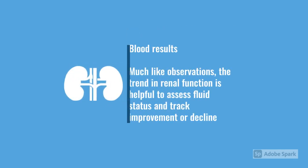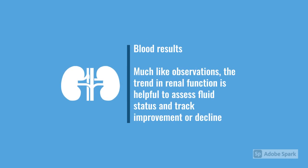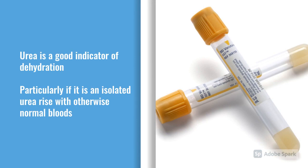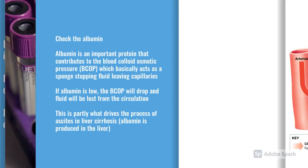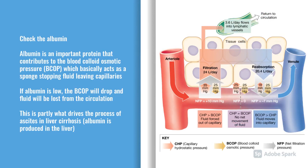You're also looking for trends in blood results. Check renal function — whether it's been static or changed significantly. Urea is quite a good specific indicator for dehydration; an isolated raised urea suggests someone's dehydrated without significant knock-on effects to renal function. An increased haematocrit is another good indicator — haematocrit is essentially a measure of how thick the blood is and how much plasma is in it. Albumin and total protein are useful too, as albumin increases blood oncotic pressure; that's why liver failure patients get oedema — they don't have that protein drawing fluid into the intravascular space.